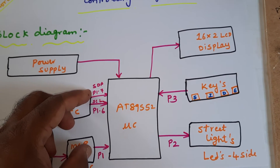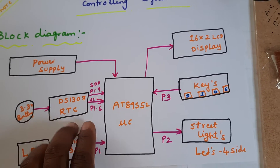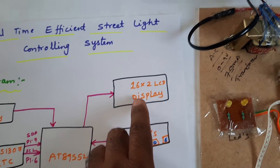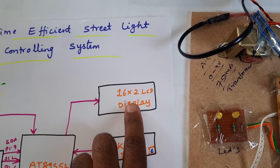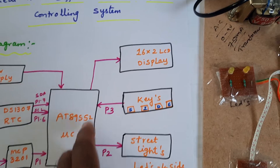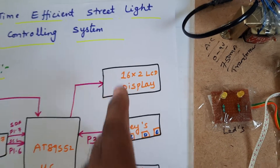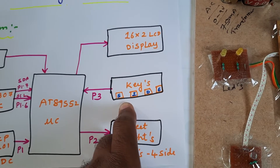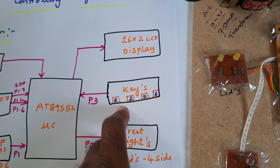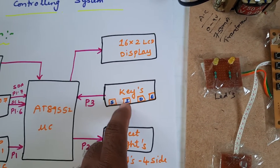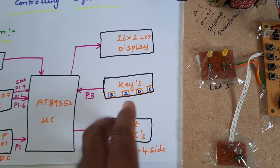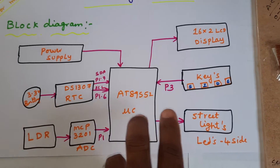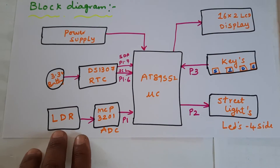The DS1307 RTC IC is connected via SCL and SDA to the 89S52 microcontroller IC. A 16x2 LCD character display shows whatever process is going on. There are four switch buttons connected to the 74LS21 AND-gate IC for select, increment, decrement, and exit — used to set the time interval of the DS1307 RTC.